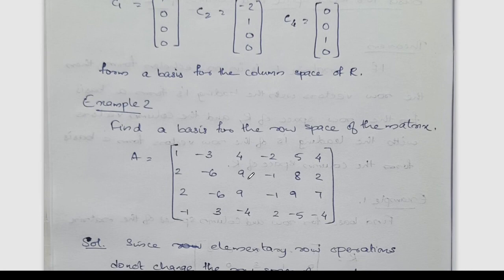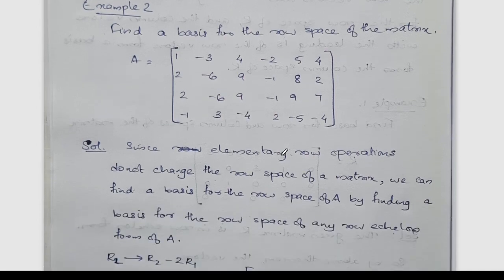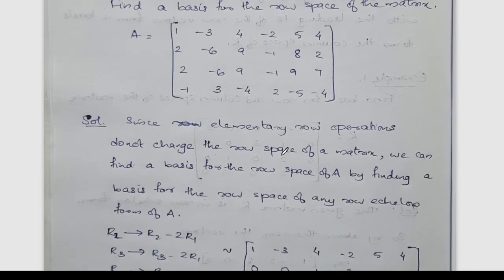Find a basis for the row space of the matrix. The given matrix is a 4 by 6 matrix: first row 1, 3, 4, 2, 5, 4; second row 2, 6, 9, -1, 8, 2; third row 2, 6, 9, -1, 9, 7; fourth row -3, -4, 2, -5, 4.